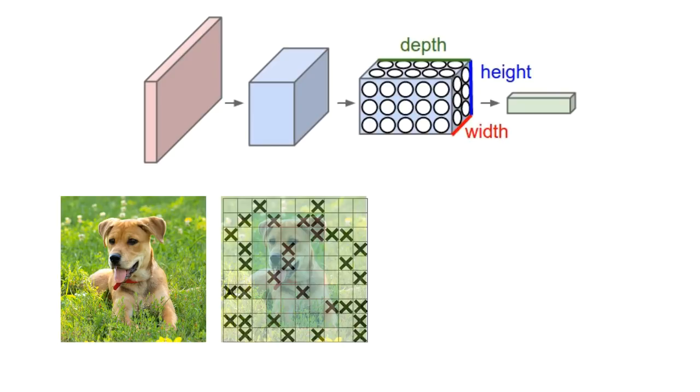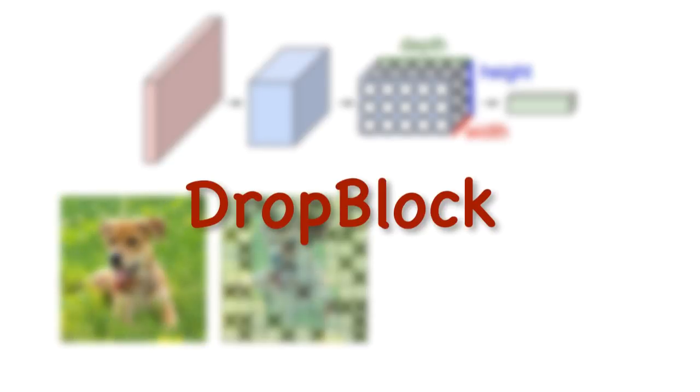To prevent this, researchers at Google Brain came up with a way to regularize convolutional neural networks such that pixel information doesn't propagate, and this technique is called DropBlock.